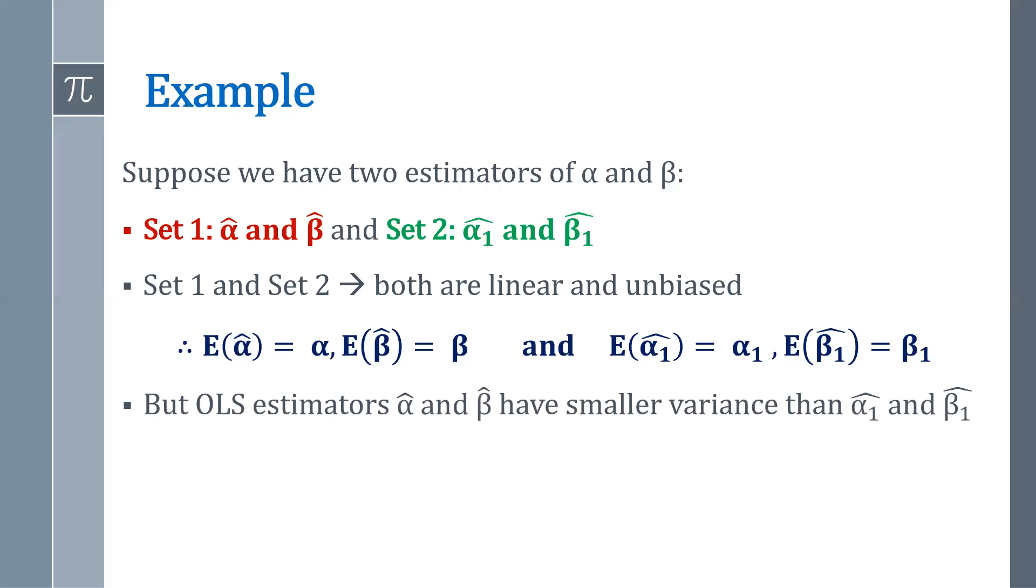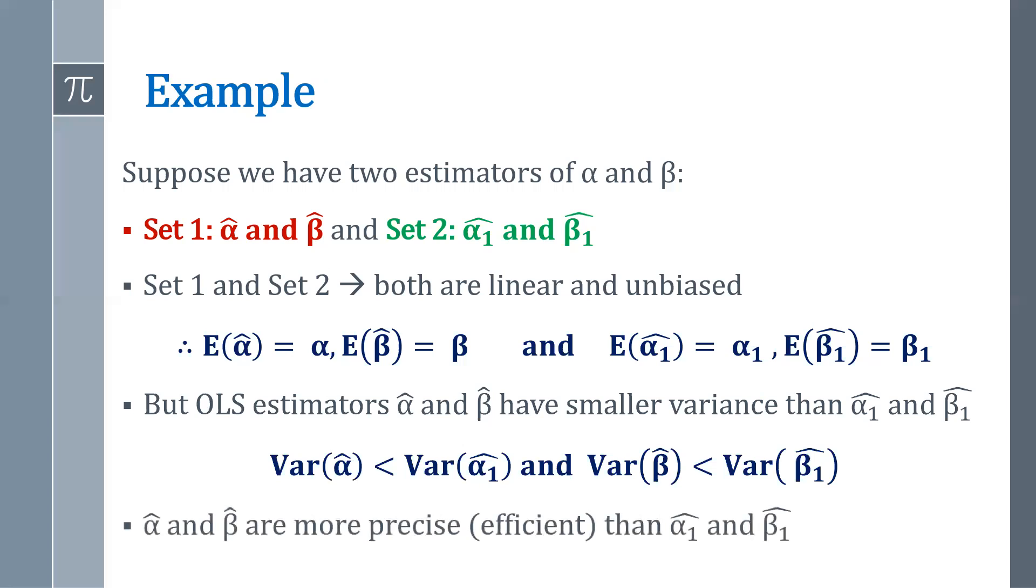But OLS estimators alpha hat and beta hat have smaller variance than alpha one hat and beta one hat. That means variance of alpha hat is less than variance of alpha one hat, and variance of beta hat is less than variance of beta one hat. So when it comes to the choice of the best OLS estimators, we go for alpha hat and beta hat because they are more precise—they have less variance than alpha one hat and beta one hat—so they are more efficient and therefore they are the best estimators.